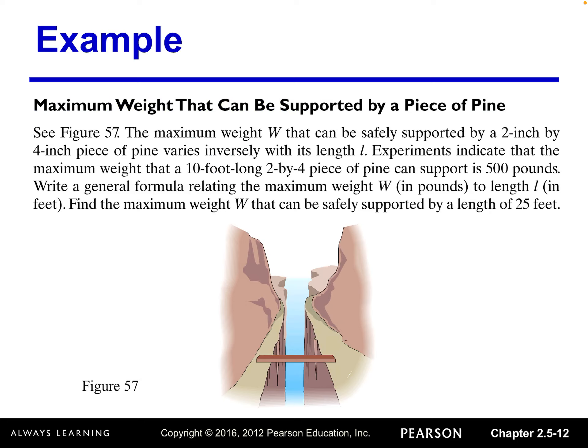So now let's look at an example. How we construct a model using inverse variation. So look at this figure. This figure shows the maximum weight w can be safely supported by a 2 by 4 inch piece of pine varies inversely with its length l.